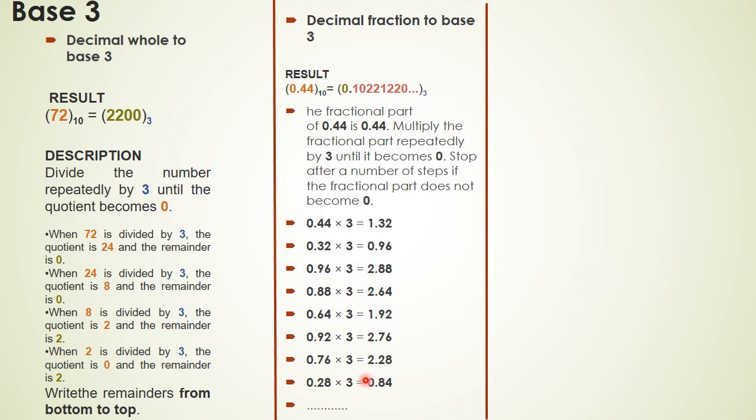Again I am ignoring 2, writing 0.88, the result is 2.64. Ignoring 2, 0.64 into 3 equals 1.92. And I will stop here as I can see I am getting 0 again. I will stop here but not here, I will move till I get another 0 and then I will write the number like this moving from top to bottom. Like the number is 1, 0, 2, 2, 1, 2, 2, 0 and so on, you can see here.